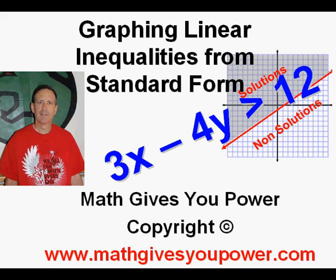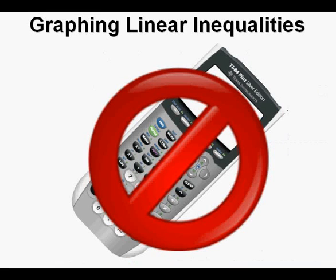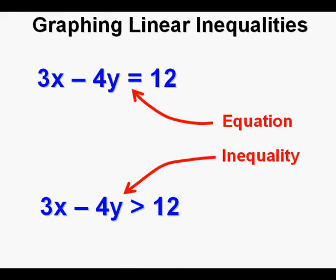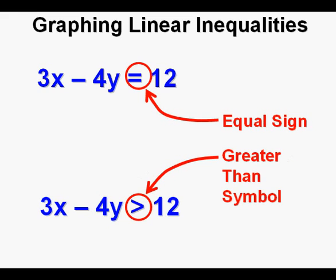Graphing Linear Inequalities from Standard Form. For this video lesson, we will set aside the graphing calculator and use plain old-fashioned graph paper. A linear inequality in standard form looks very much like an equation in standard form. Here we have the equation 3x minus 4y equals 12, and the inequality 3x minus 4y is greater than 12. The only distinction between these two relationships is the symbol: an equal sign versus the inequality symbol — in this case, greater than.